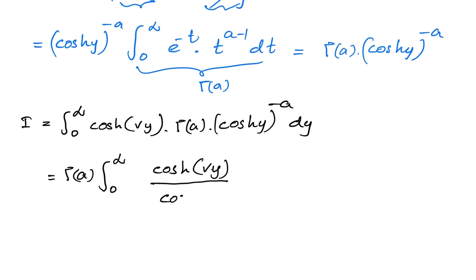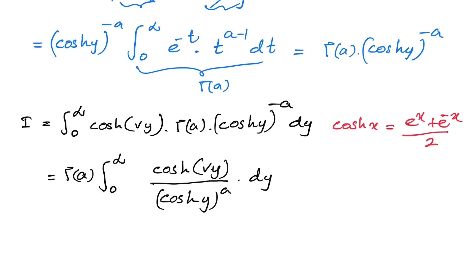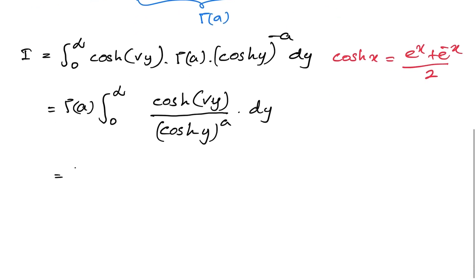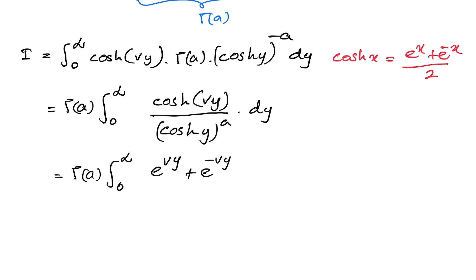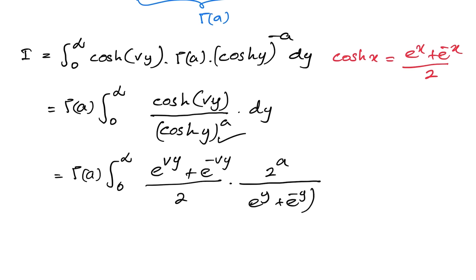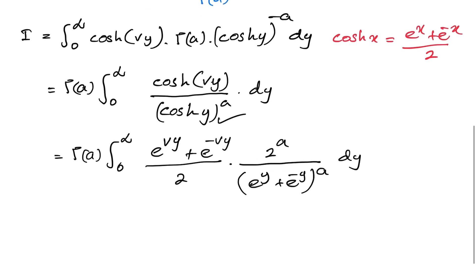Factoring out the constant, I = Γ(a) times the integral from 0 to infinity of cosh(vy) over cosh(y) to the a power dy. Using the definition cosh(x) = (e^x + e^(-x))/2, we substitute: cosh(vy) = (e^(vy) + e^(-vy))/2 and cosh(y) to the a = (e^y + e^(-y))^a / 2^a.